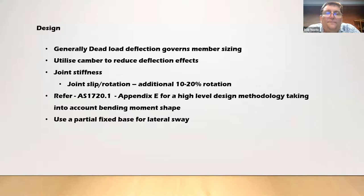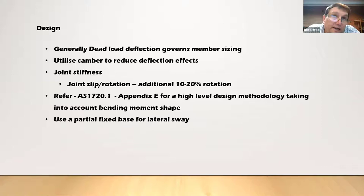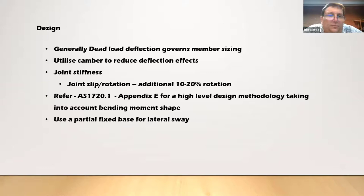Appendix E is a very underutilised area of our timber code and gives us the ability to design portal frame members with additional benefits, taking into account actual material properties. Section 3 of the code is very conservative, based on a constant moment diagram, whereas Appendix C allows you to take into account the bending moment shape, lateral support locations, and supports on the tension edge rather than the compression edge. There's generally a benefit in using Appendix C for rafters and column design.